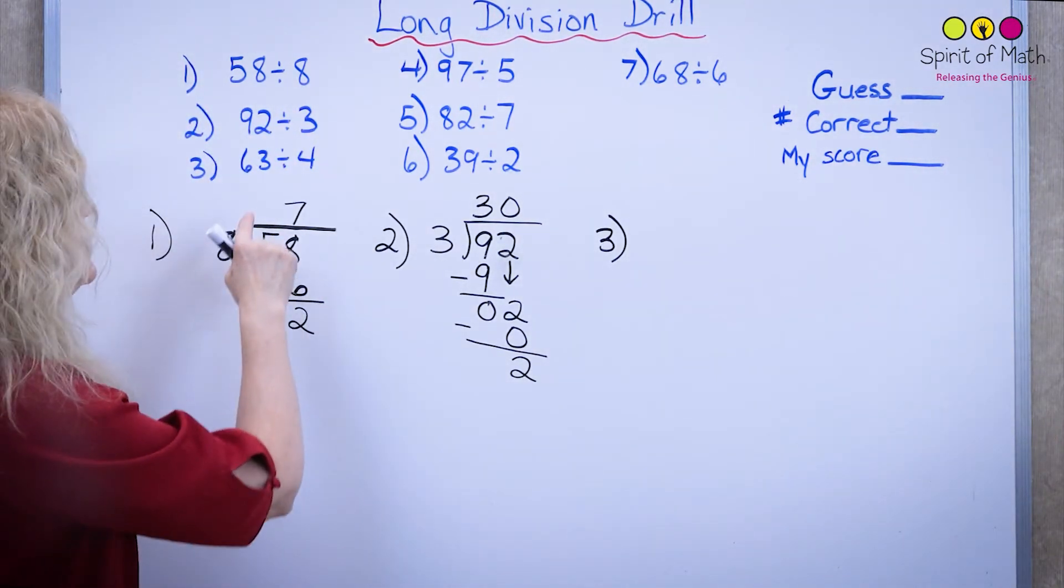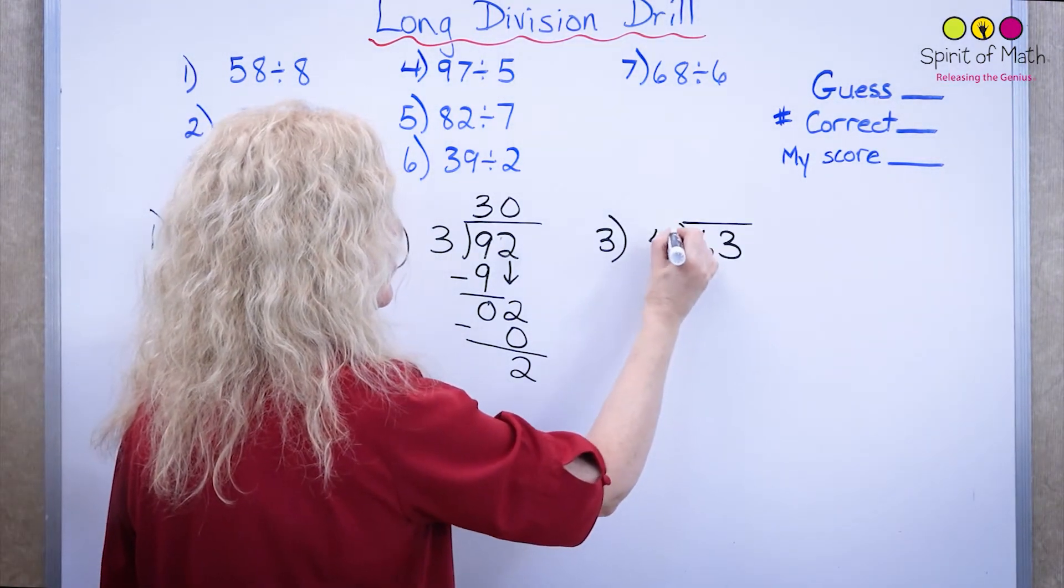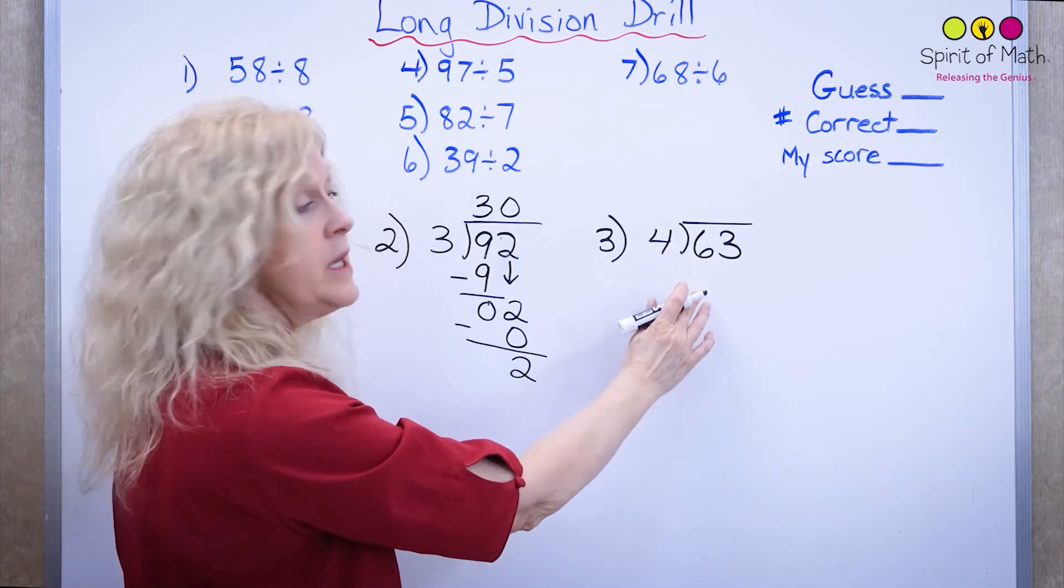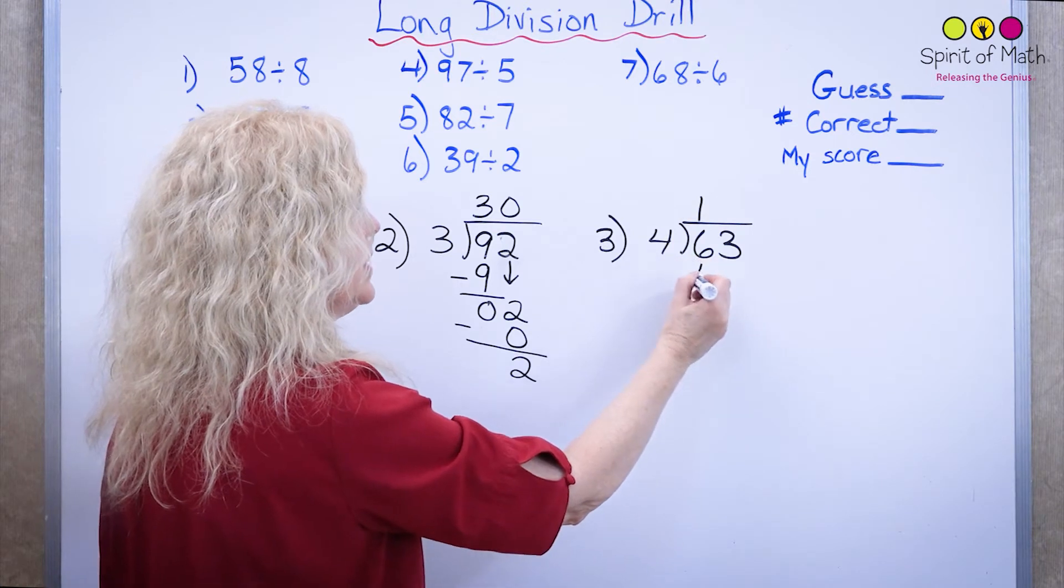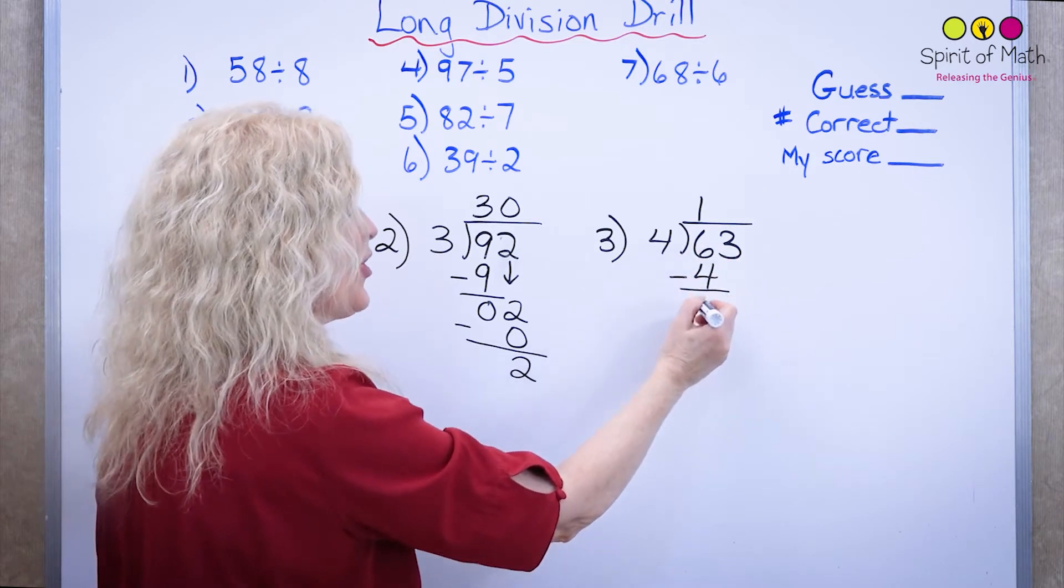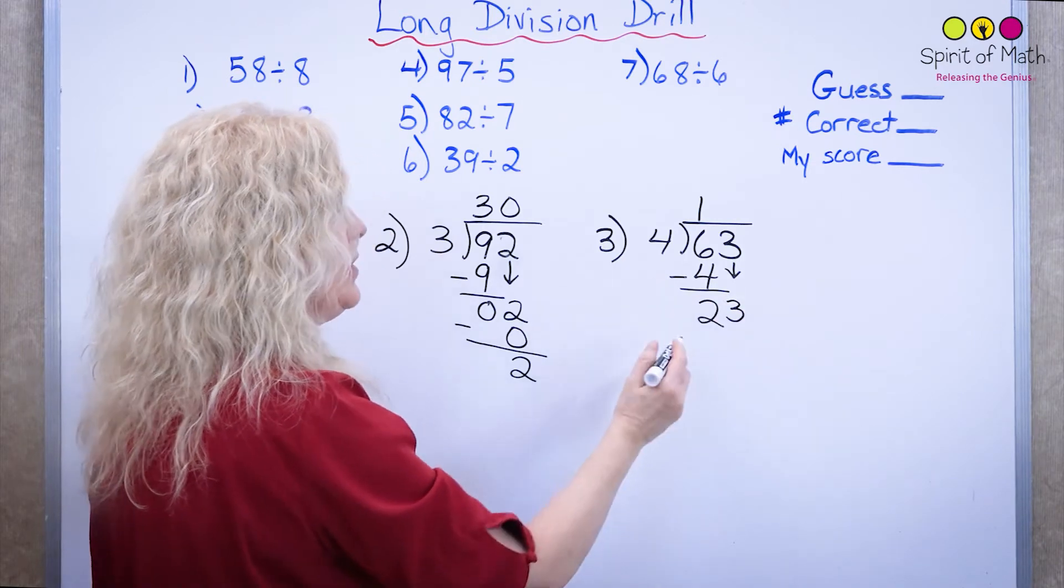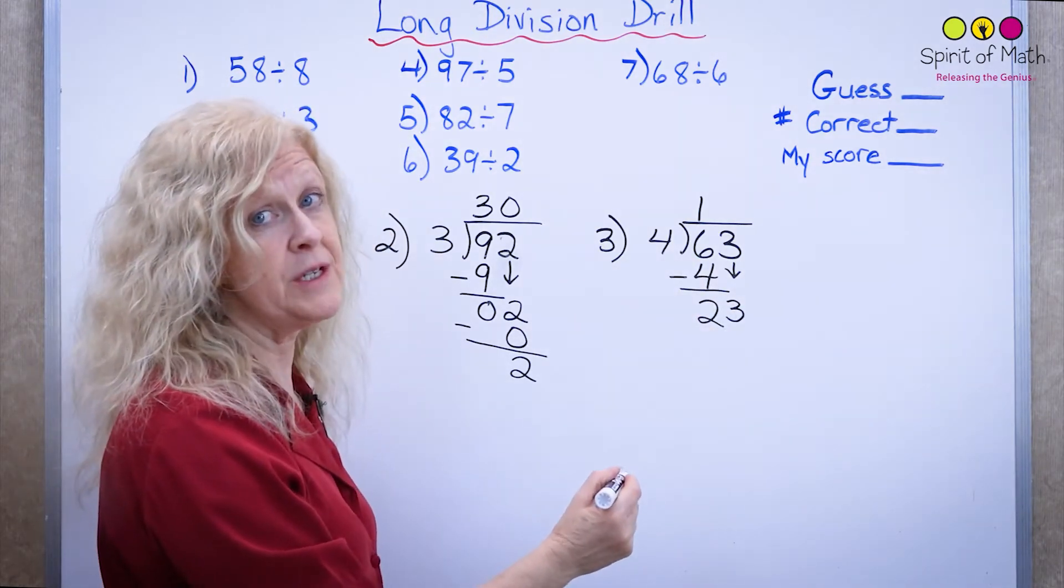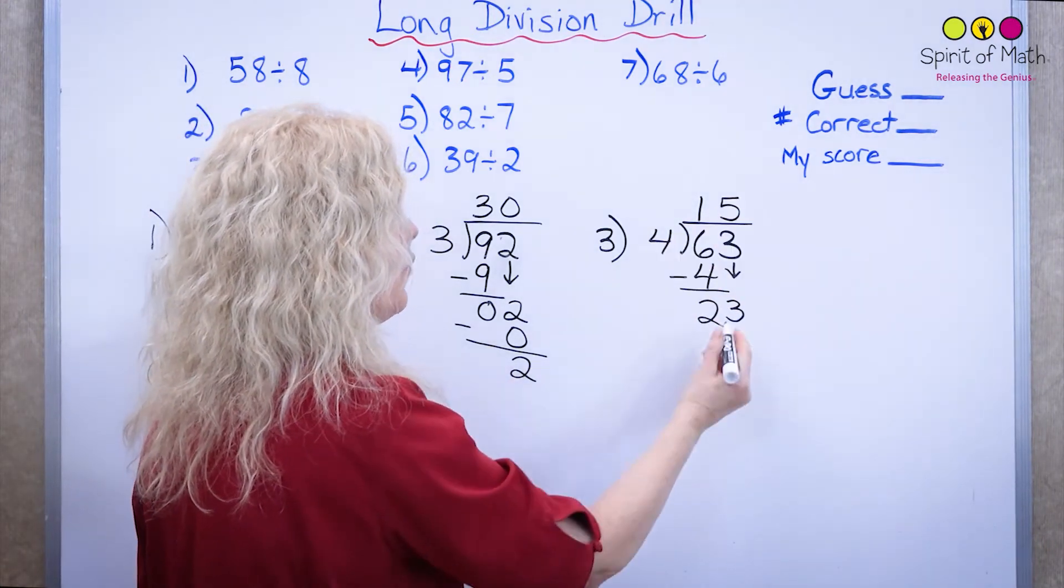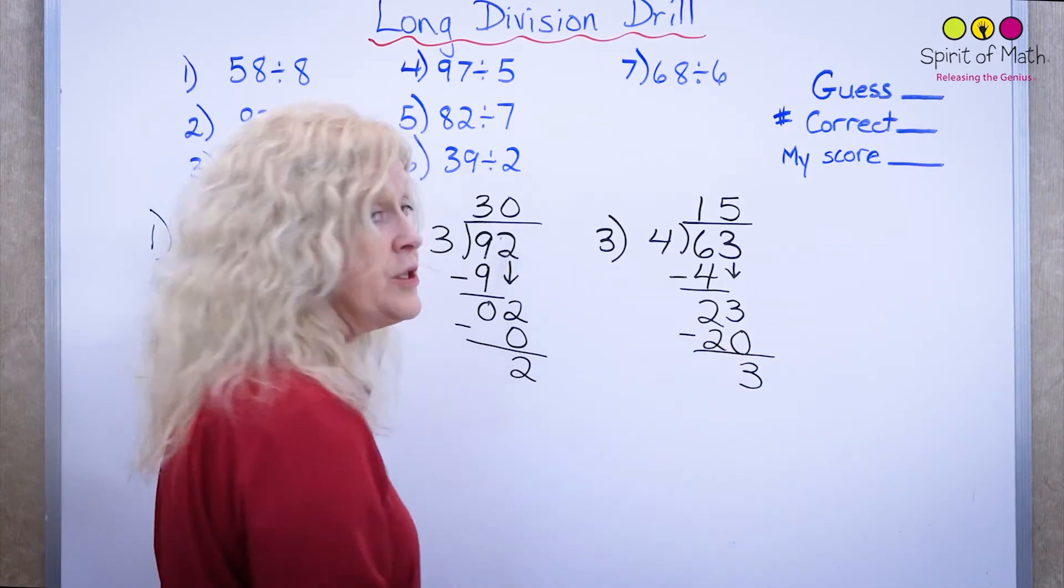Number 3 says 63 divided by 4. So you take the 63, you divide that by 4. Now 4 into 6. So how many groups of 4 can you take out of 6? You could take one group. 1 times 4 is 4. You subtract to find the remainder. 6 minus 4 is 2. Now you have to bring down this 3 and now you can say how many groups of 4 can you take out of 23? Well, the closest would be 5 and 5 times 4 is 20 and you subtract and you're left with remainder 3.